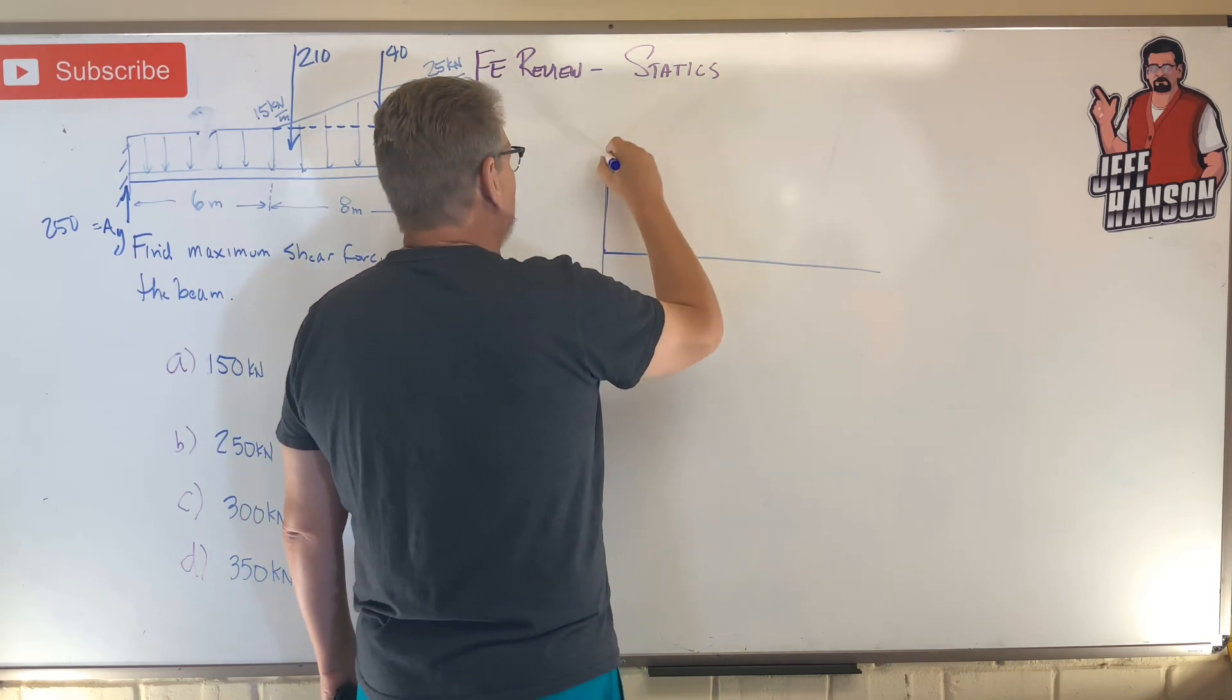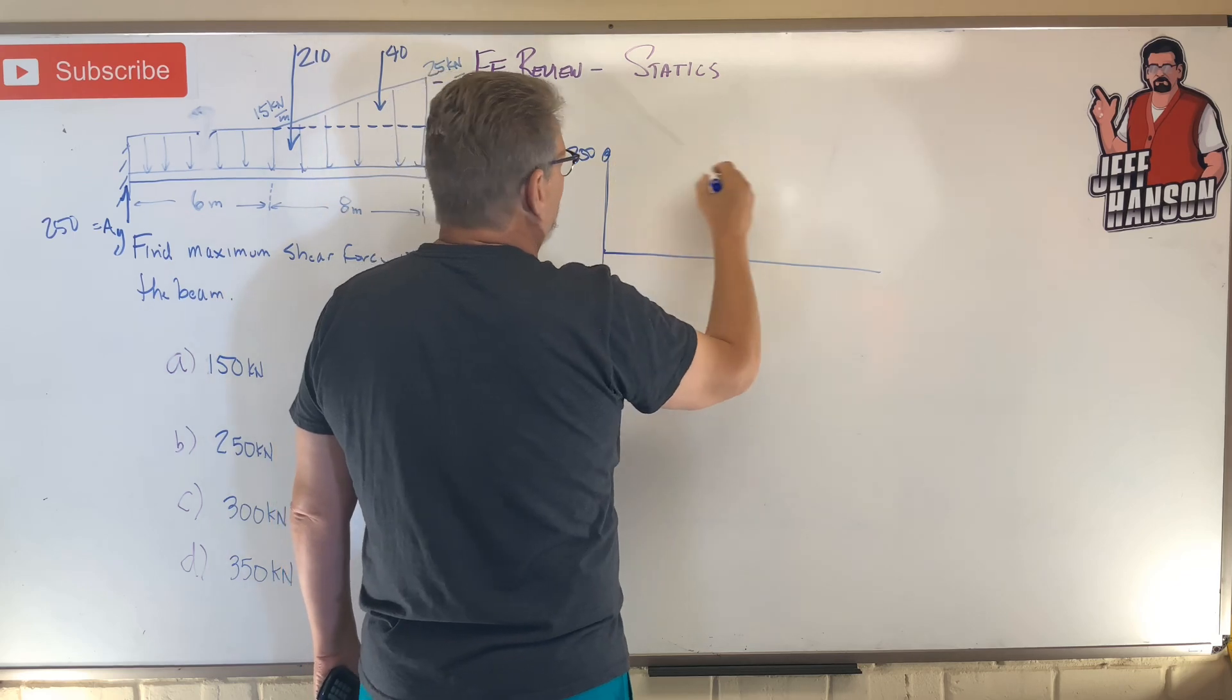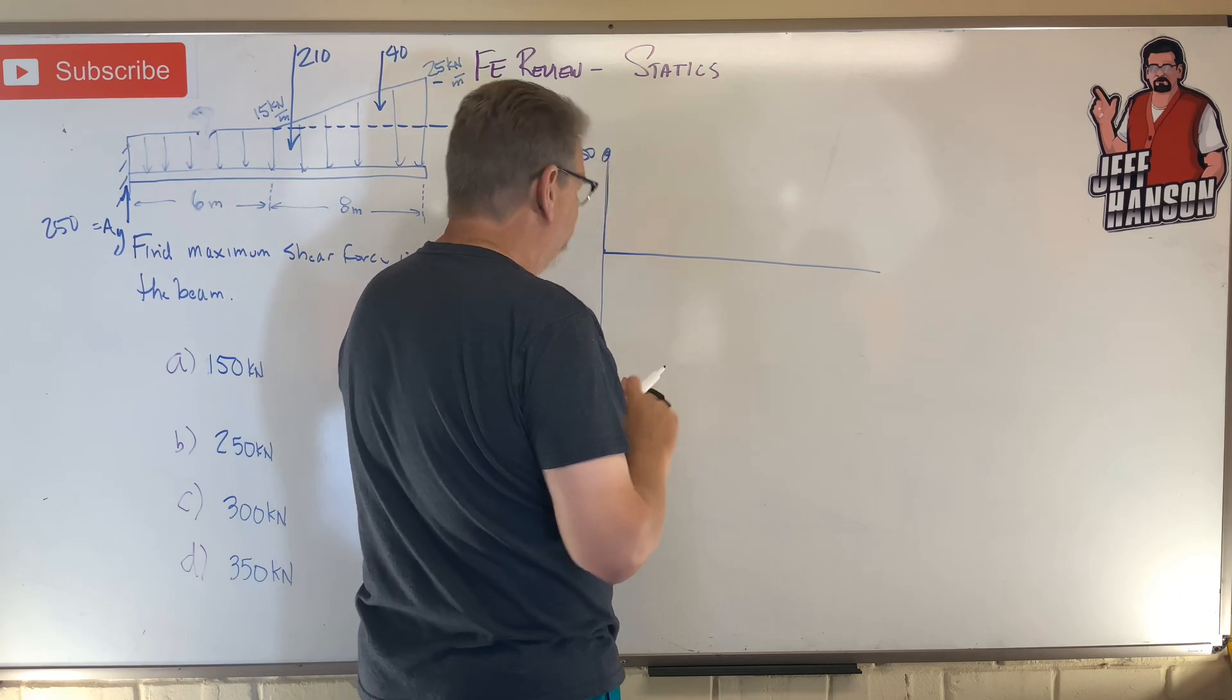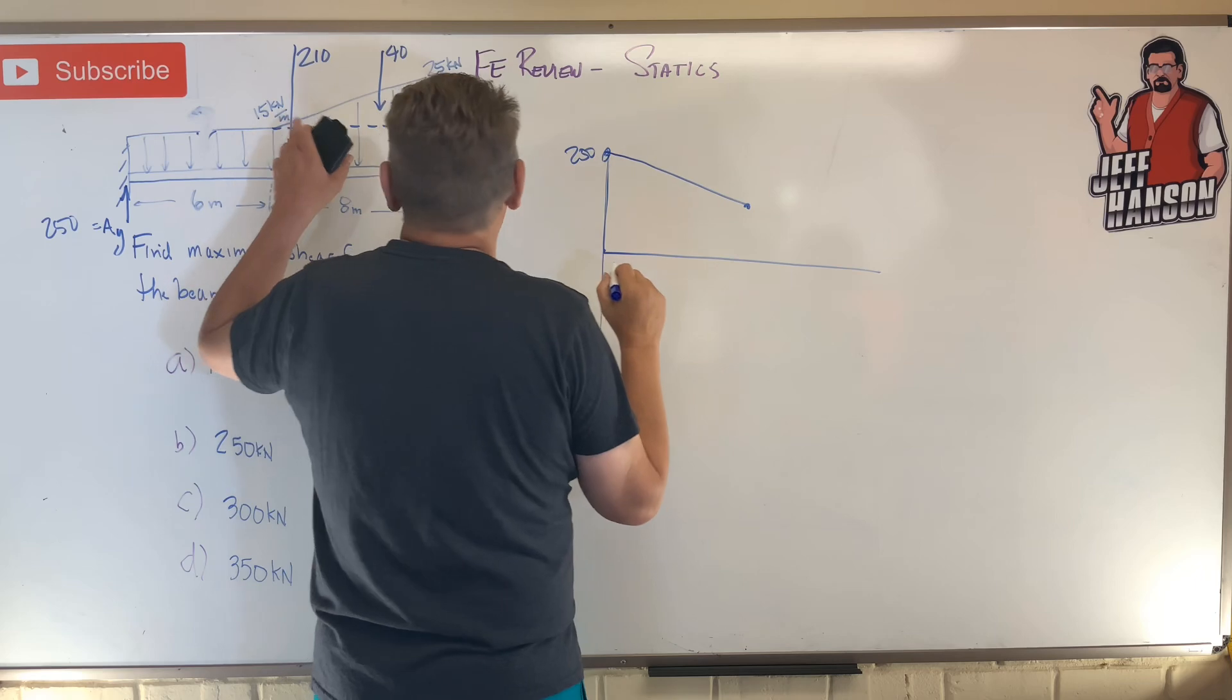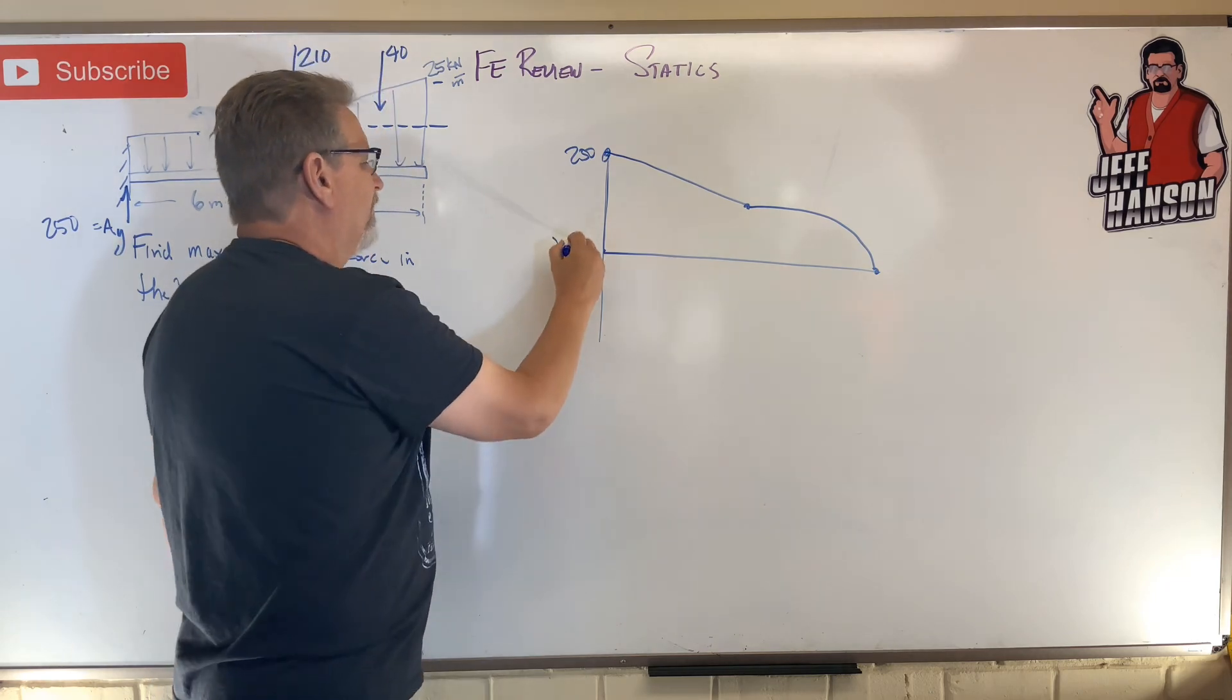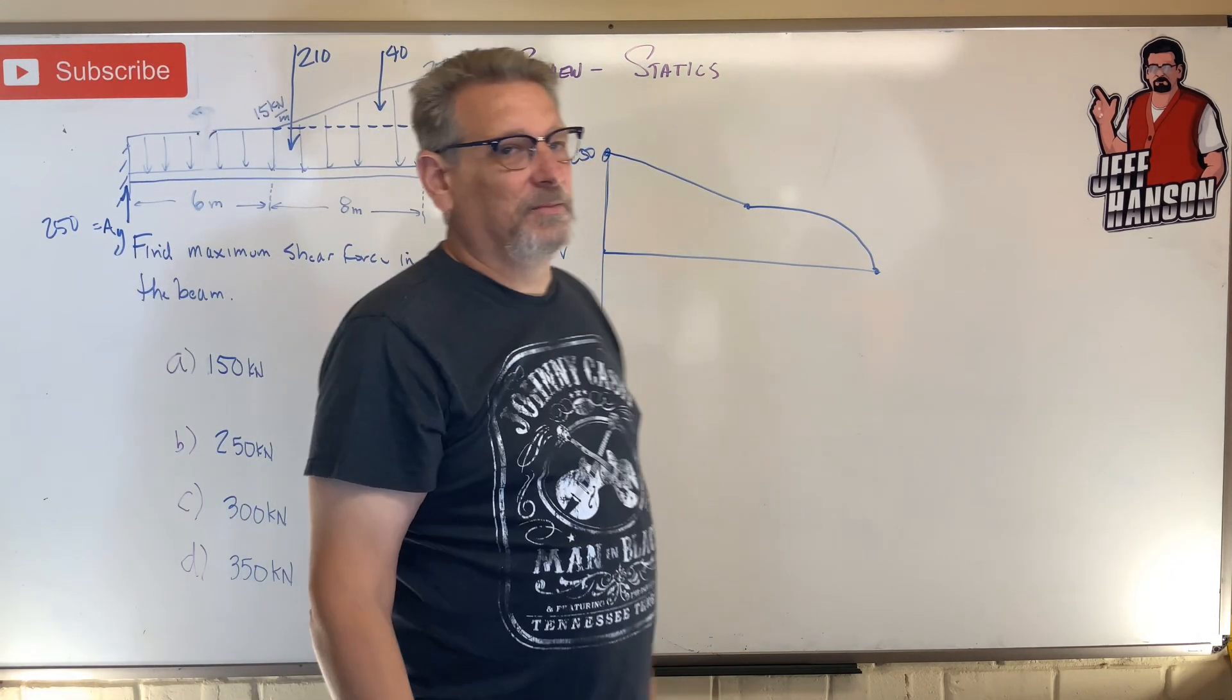Because if we have a shear force, what we do is we go up 250, right? Then we go down six times fifteen—six times fifteen equals ninety—and then we got to go down some more, slow then fast, back to zero. That's what the graph looks like for the V diagram. So clearly 250 is the maximum shear force on that beam.